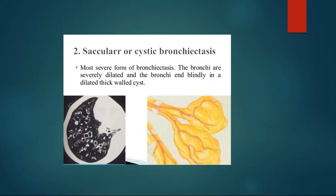Coming to saccular or cystic bronchiectasis, this is the most severe form of bronchiectasis. The bronchi are dilated and end blindly in a dilated thick-walled cyst. In the fusiform variety there is uniform dilatation, whereas in the saccular variety the dilated airways end in the form of a sac containing dilated thick-walled cysts.